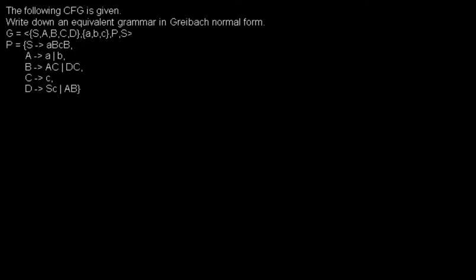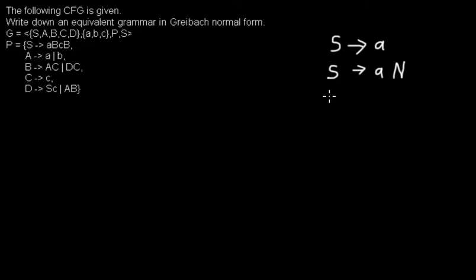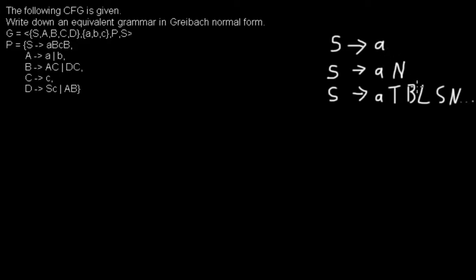First, let me tell you what Greibach normal form is. Every production rule looks like this: a non-terminal expands to a terminal, or a non-terminal expands to a terminal followed by another non-terminal, or a non-terminal expands to a terminal followed by a very long list of non-terminals. The first symbol on the right-hand side must always be a terminal, followed by an arbitrarily long concatenation of non-terminals.